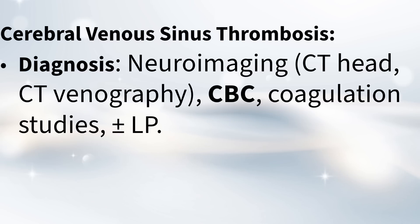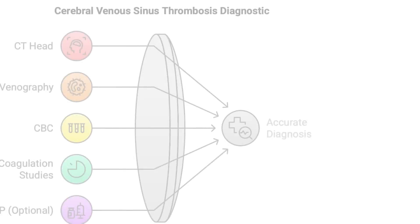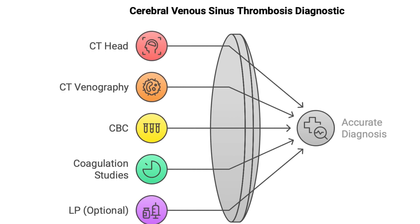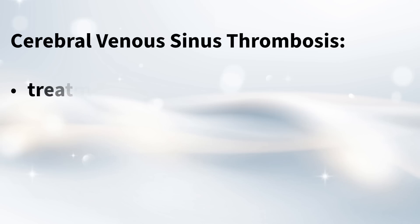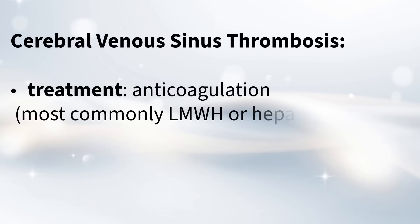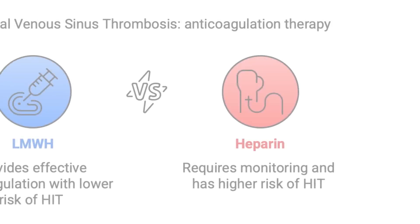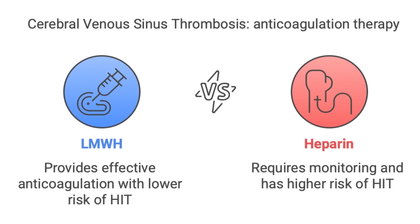Diagnosing cerebral venous sinus thrombosis requires neuroimaging — usually a CT scan of the head and often a CT venogram, a special type of CT scan that focuses on the veins in the brain. They might also do blood tests like a complete blood count and coagulation studies, and sometimes a lumbar puncture. The main treatment is anticoagulation — blood thinners like LMWH (low molecular weight heparin) or regular heparin.